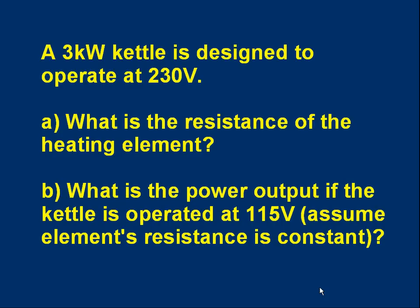Time to do some problems. Here's a typical problem. A 3 kilowatt kettle, that's its power dissipation. 3 kilowatt kettle is designed to operate at 230 volts, typical in the UK. Can you find the resistance of the heating element? And once you've done that, what do you think the power output would be if the kettle is operated at 115 volts instead of 230 volts? And to do that, you can assume the resistance stays the same. Sometimes resistance changes, like a light bulb gets higher if the material gets hotter. In this case, we're going to assume the resistance is a fixed value. That means the thing obeys Ohm's law.